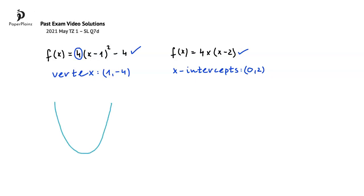The coordinates of the vertex, as we said, are (1, -4), and if we draw the x-axis here, we can add the x-intercepts, so 0 and 2.